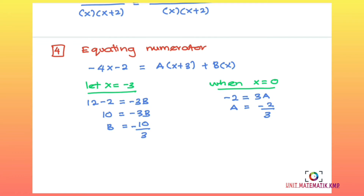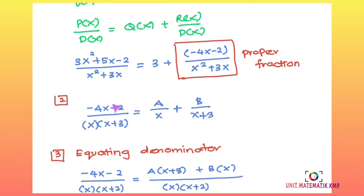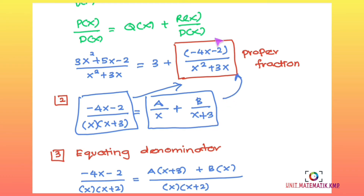We then substitute the values of A and B back into the partial fraction equation. Recall this partial fraction expression came from our earlier step, so our final answer must be written in terms of that full expression combining the polynomial part and the partial fractions.